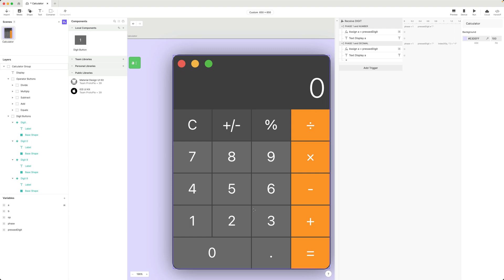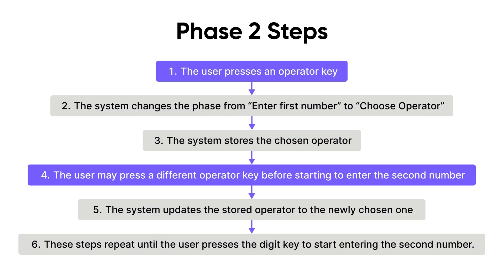I want to be able to enter a number and then press one of the operator buttons to choose which operation I want — plus, minus, multiply, or divide. Phase two can further be broken down into microsteps. When the user presses an operator key, we change the phase from one to two, the system stores the chosen operator, and the user can continue choosing a different operator without leaving phase two. It's not until we start entering numbers again that we switch into phase three.